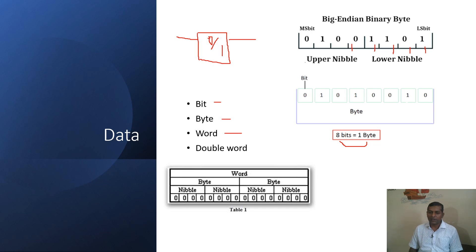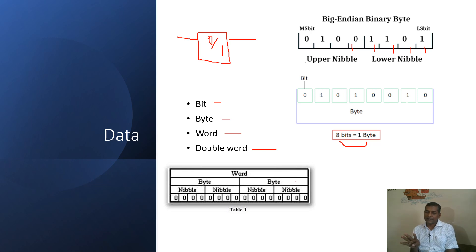A second byte is another 8 bits. A total of 16 bits, or two bytes, is known as a word. Two words are known as a double word. In addition to this, we have nibbles — four bits is known as one nibble.